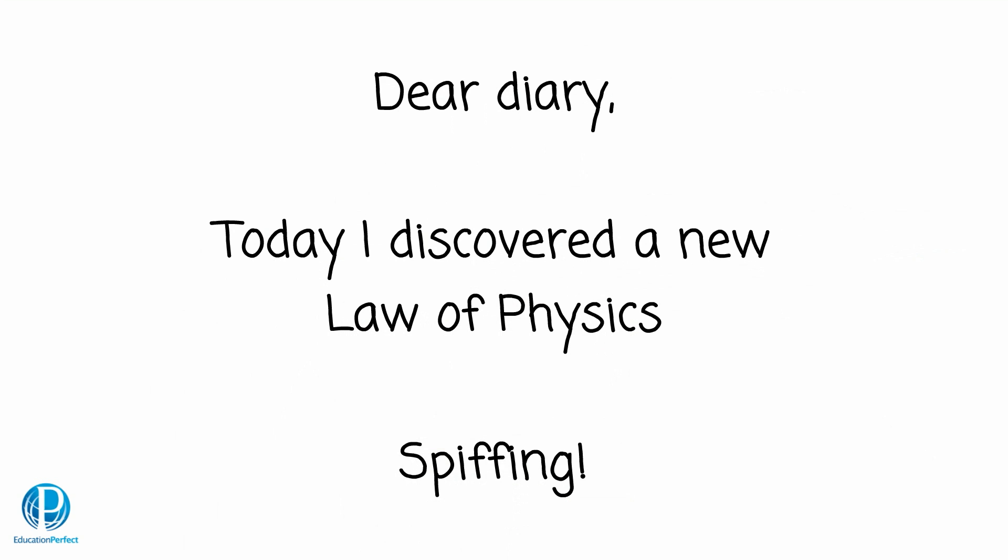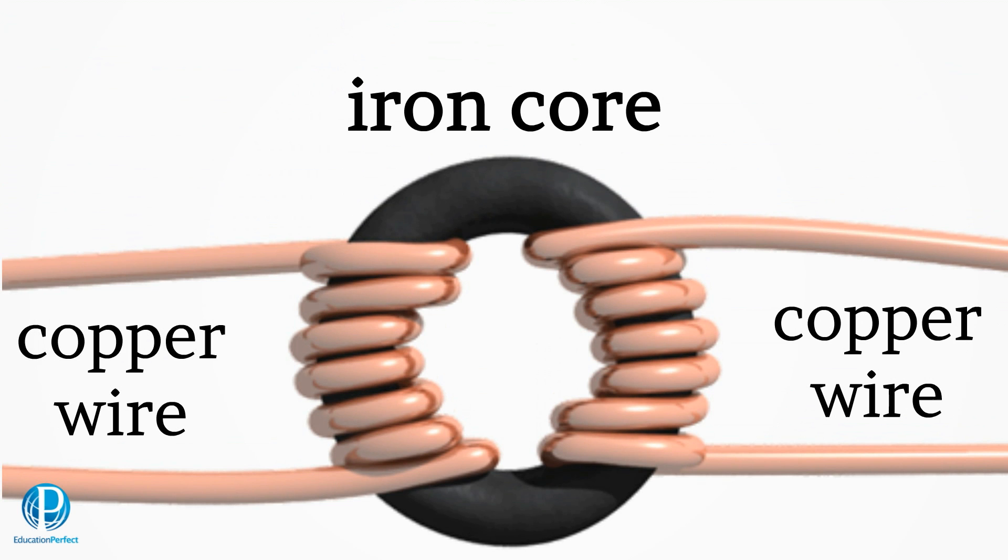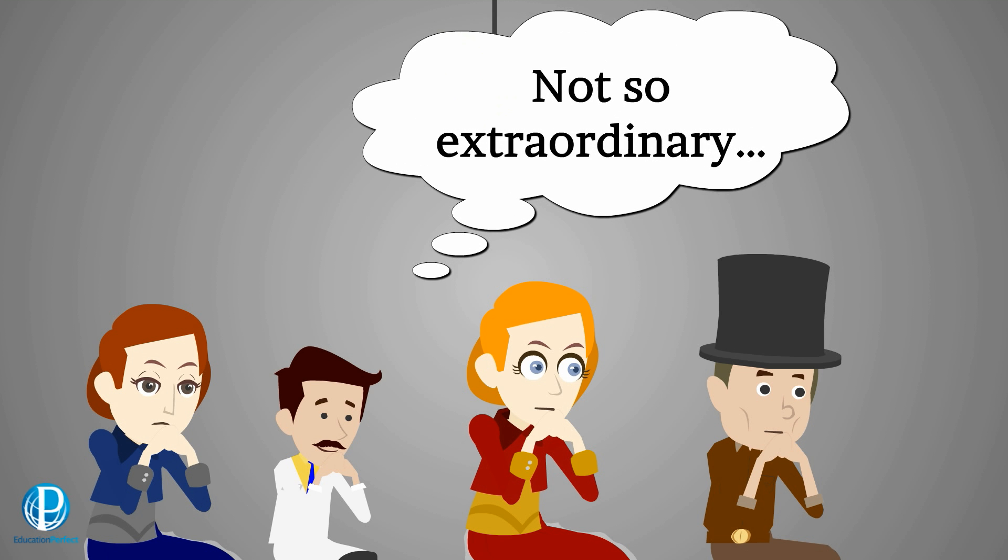What did Faraday do that was so groundbreaking? He discovered a new law of physics, the law of induction. That is the object of this film. In one of his first public demonstrations, Faraday took a simple ring of iron and wound two pieces of copper wire around it. Nothing so extraordinary about that, thought the gathered audience.